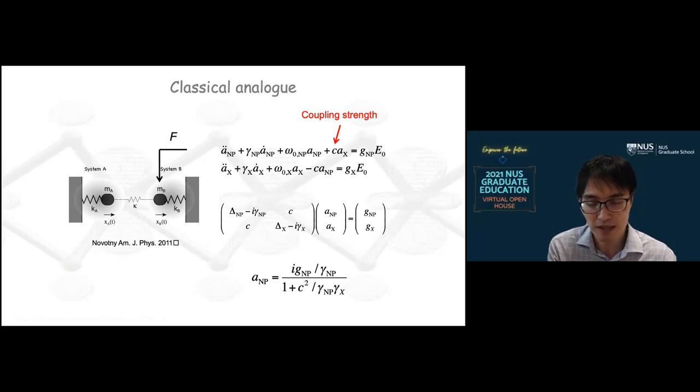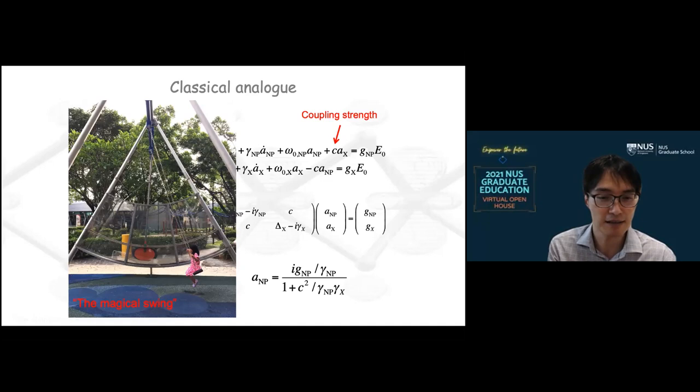And the analog of this process actually can be seen in Singapore Science Center, where there's what they call the magical swing, which is a swing which is connected to a big pendulum. So here's a picture of my daughter sitting on this magical swing. And what happens is that when she starts swinging, then her oscillation is damped, whereas the oscillation of the pendulum starts to increase. So this is a classical analog, but this quantum analog of this process is what we think is happening in the results that I just shared a few slides ago.